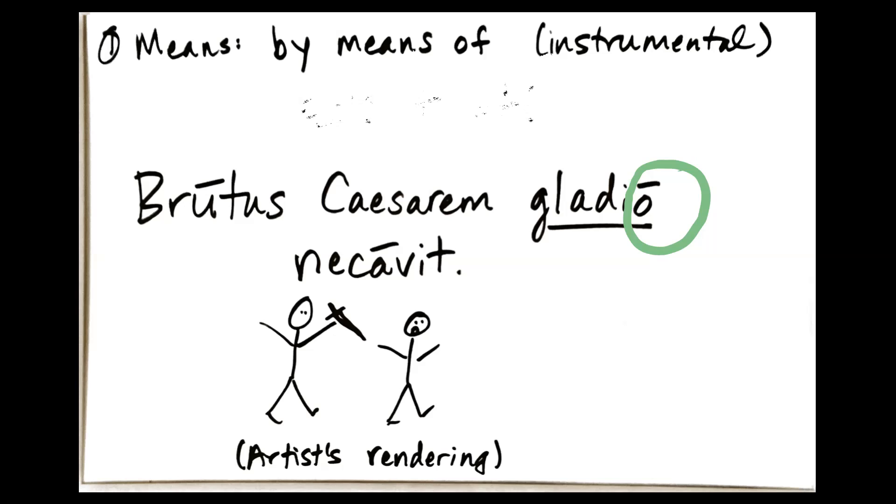And this word gladio, it's from gladius, gladii, masculine, meaning sword. Brutus caesarum gladio necavit. Brutus killed Caesar by means of a sword.